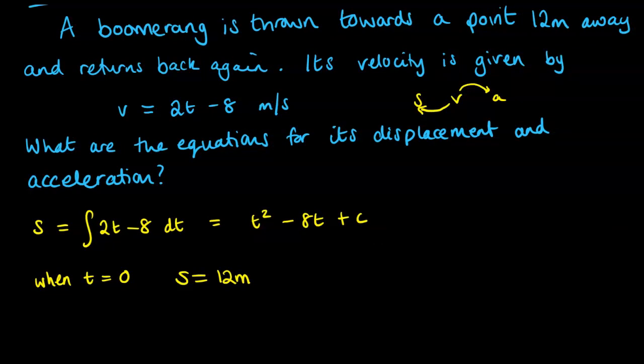Now it might be tempting to try and think about the displacement as being how far away it is from the person that threw it, but that's going to be very tricky to work out because we don't know when it gets to the turning point. We don't know how long that is. We have to work it out as displacement from the turning point.